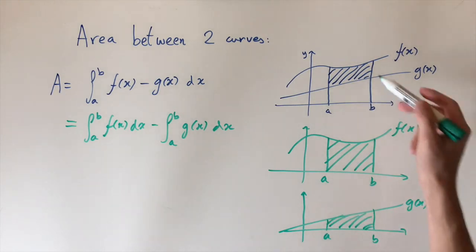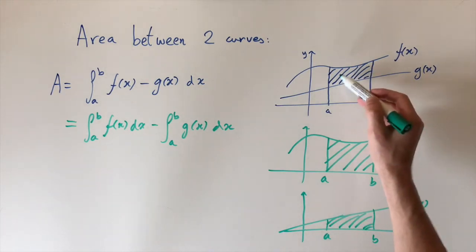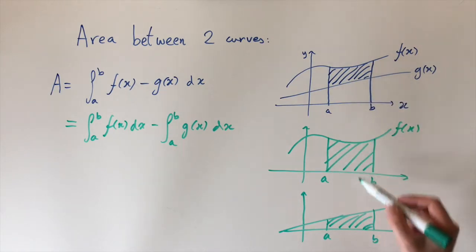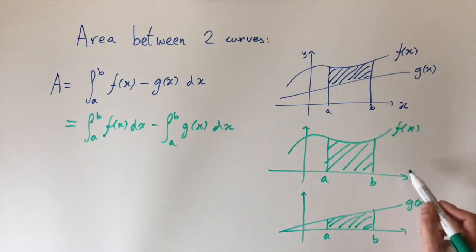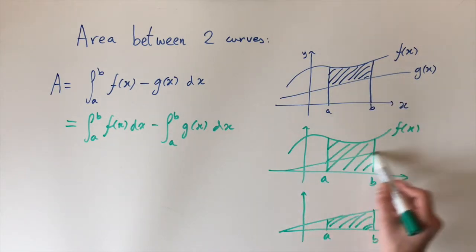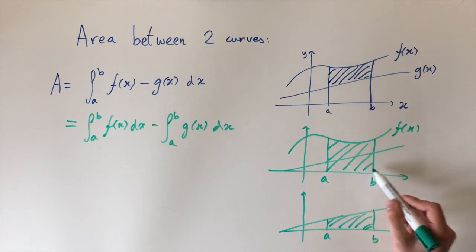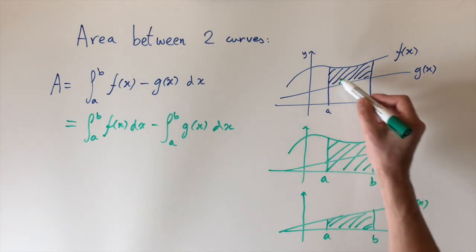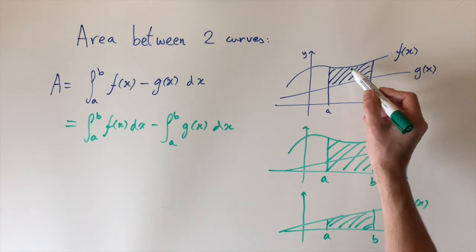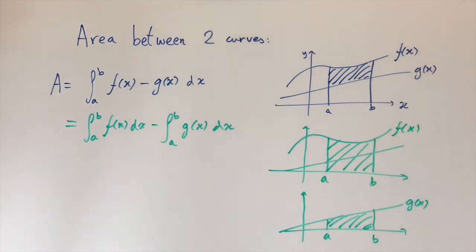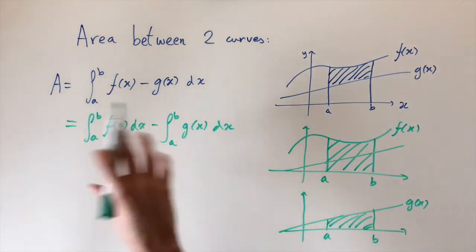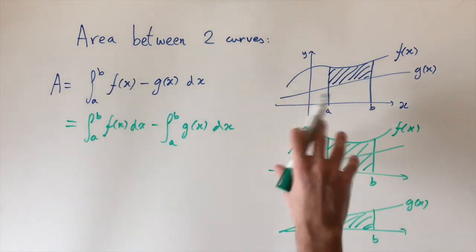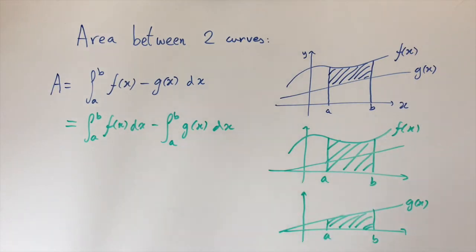So if we want just the upper region, we integrate f entirely and then subtract off the lower region, cancelling off that area and leaving just the area between f and g. That's why the formula makes sense. Now we'll look at an example to see how this works in practice.